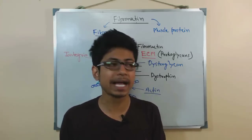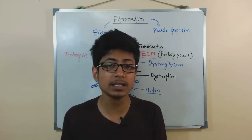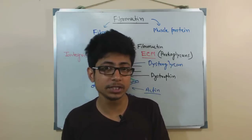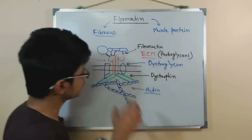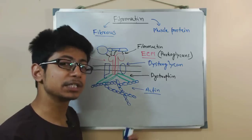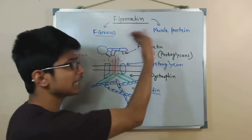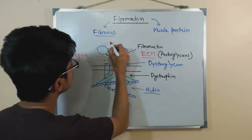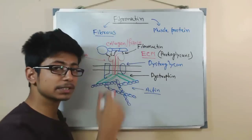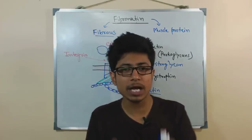Inside our cells, we have cytoskeletal elements like actin filaments and microfibrils. Those actin filaments present inside the cytoplasm need to be connected with extracellular matrix proteins to provide proper rigidity and to maintain cell shape. The actin polymers maintain the cell's internal shape, while outside we have extracellular matrix proteins like fibrin, heparin sulfate, and collagen.